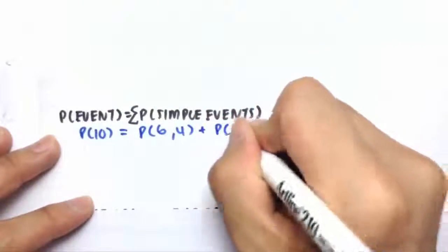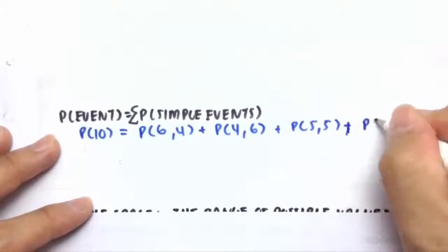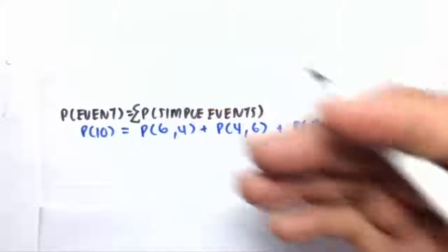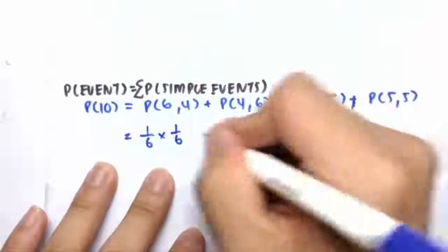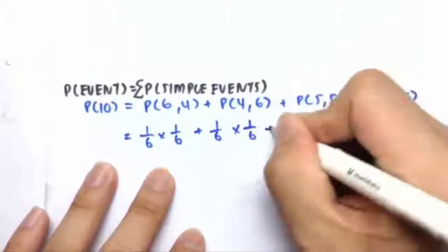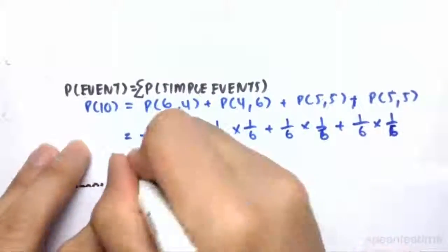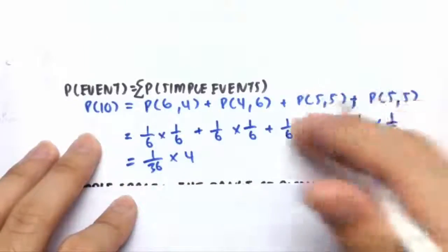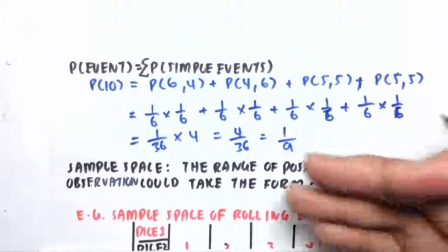The combinations that make up 10 are: rolling a four then a six, rolling a five then a five, and rolling a five then another five. So we have four possible combinations that add up to 10. The probability of each is 1/6 × 1/6. Adding them all: (1/36) × 4 = 4/36, which gives us a probability of 1/9. So that is the probability of accumulating a total of 10.